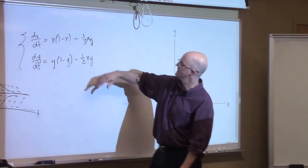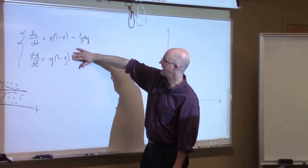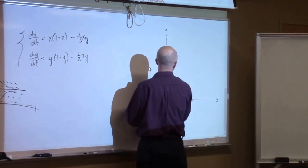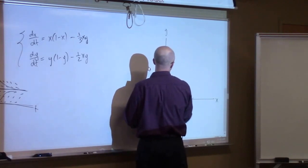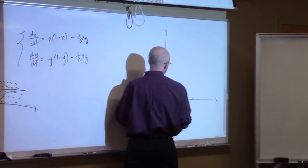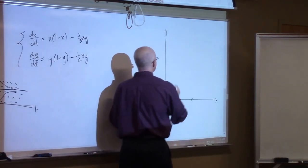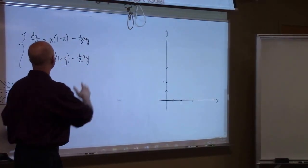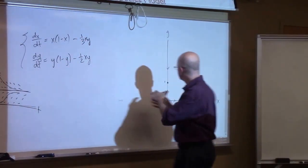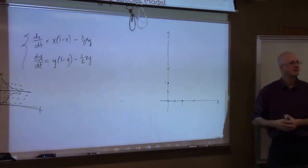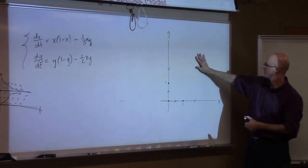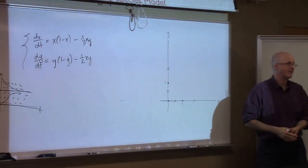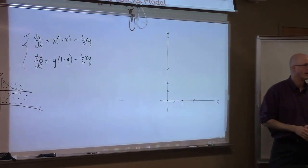A similar thing happens with the y-equation. When x is 0, that interaction term goes away and you get the same logistic model. On the y-axis, you're going to have an equilibrium point when y is 1, with increasing solutions when they start less than 1 and decreasing solutions when they start greater. The hard part is what happens in the first quadrant when both initial conditions are positive — is there another equilibrium point or not? There may or may not be.